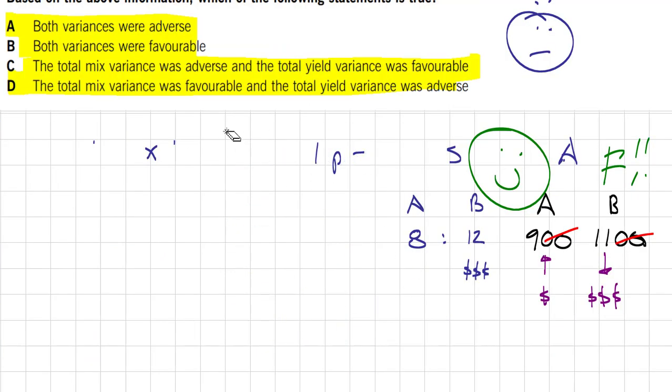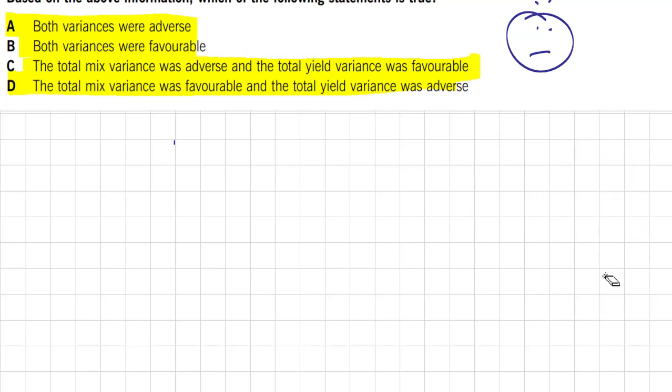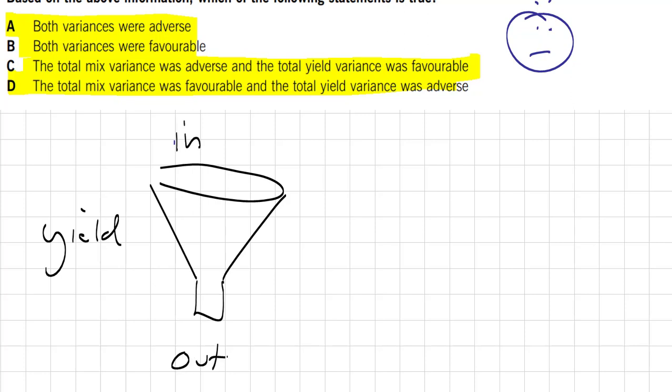Let's now move on to the yield. And now we need to look at the actual output of finished goods. And if we can draw our process again, the yield variance is looking at the inputs versus the output. Let's find out how much goes into one unit, and how much we get out. Then we'll compare that to the actual.